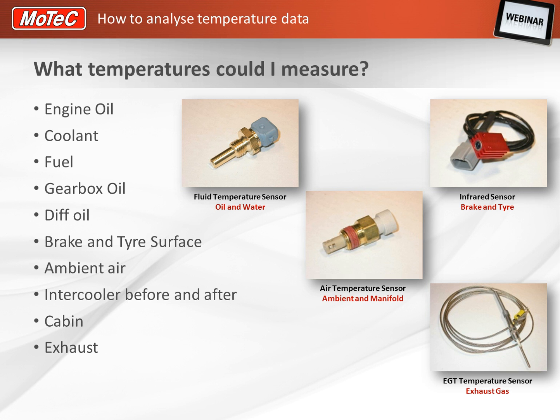Here are some photos of various sensors that you could connect to your MoTeC ECU or DASH. You can see a list of temperatures you could measure in your vehicle, such as engine oil, coolant, fuel, gearbox and diff oil. The type of sensor to use for measuring these is an oil and water sensor. It's relatively inexpensive and can be fitted to the hardware you're trying to measure. It can read temperatures up to about 140 degrees Celsius.